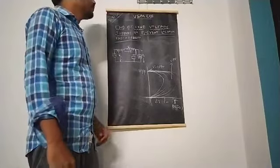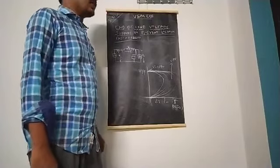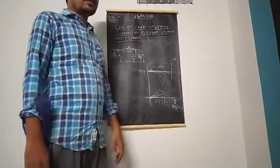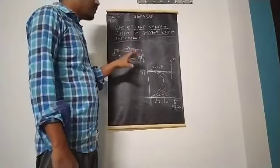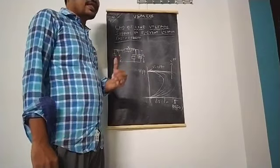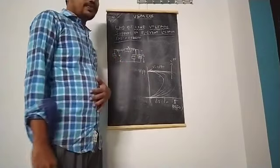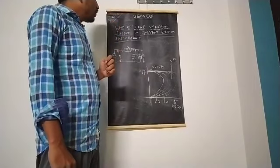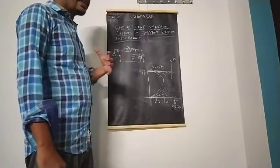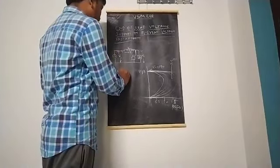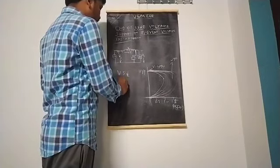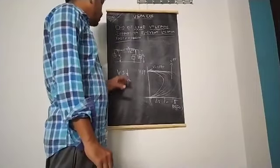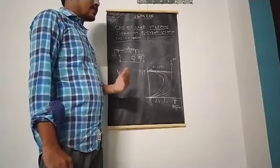We will continue with the rest of the class — the end-of-line voltage support to prevent voltage instability. In the last class, we discussed what is meant by voltage stability and voltage instability, and what are the causes of voltage instability. We observed that in case of inductive load, voltage stability decreases, while in capacitive load, voltage stability increases. That is the final conclusion from the stability concept discussed in the previous section.